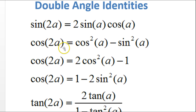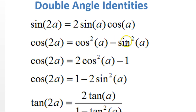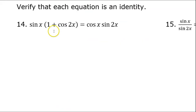I was thinking about which one of the three versions of cosine 2-theta to use, and I couldn't decide. So I'm just going to pick the first one and see what happens. Going with the first equation, cosine 2x is going to be cosine squared minus sine squared. Let's see what happens when I do this.